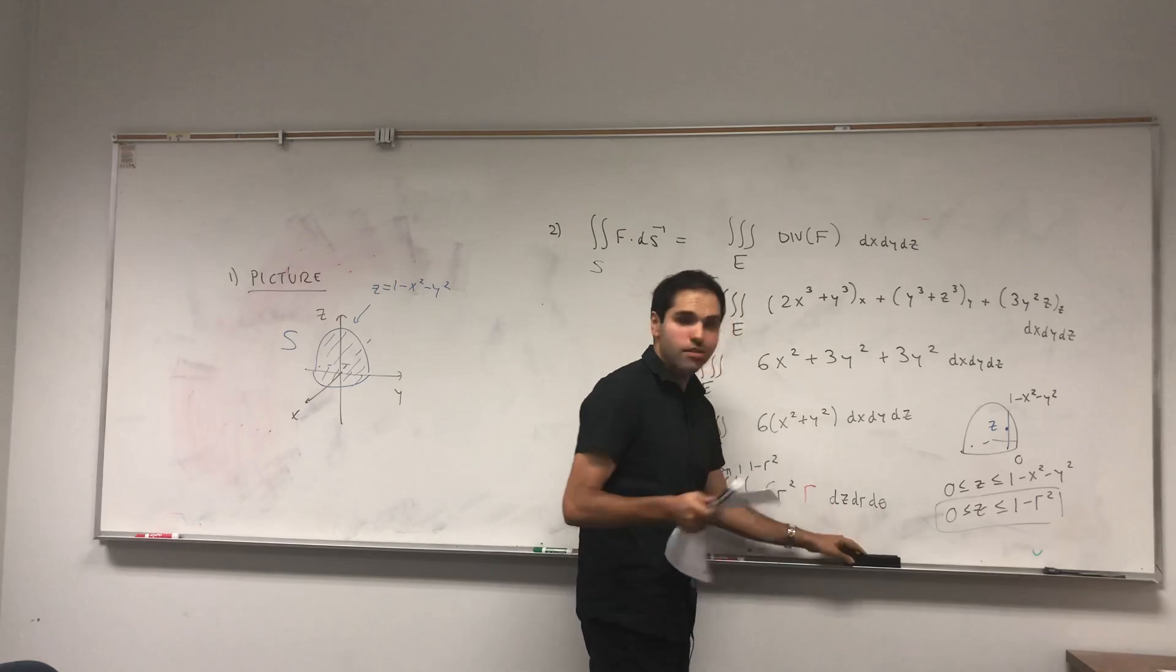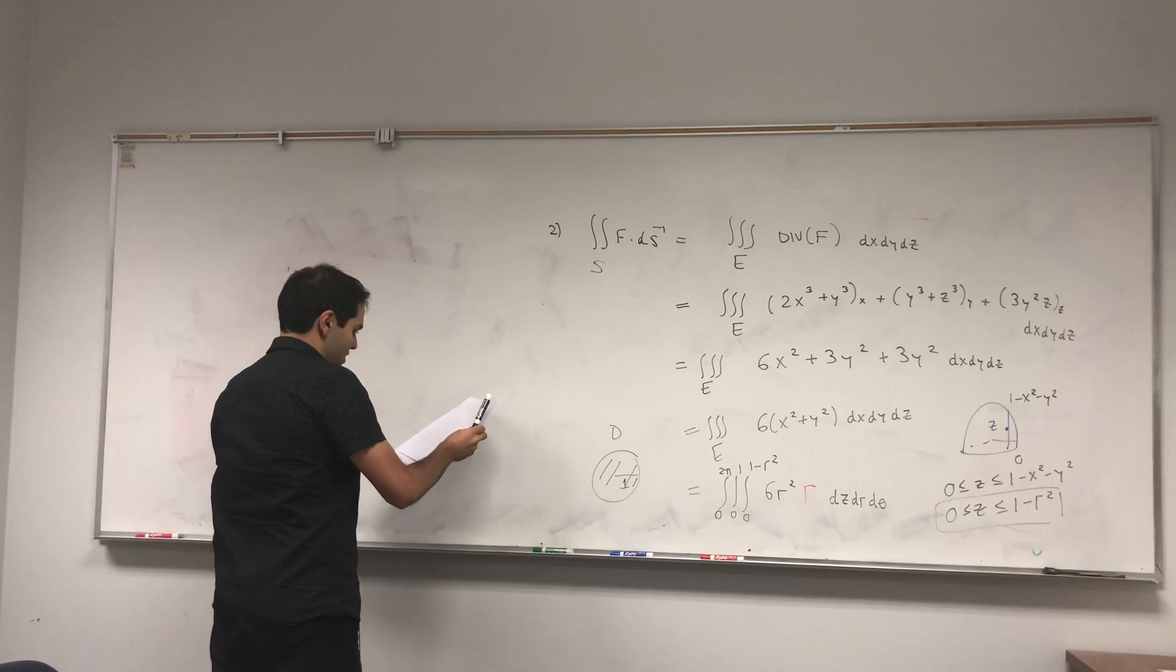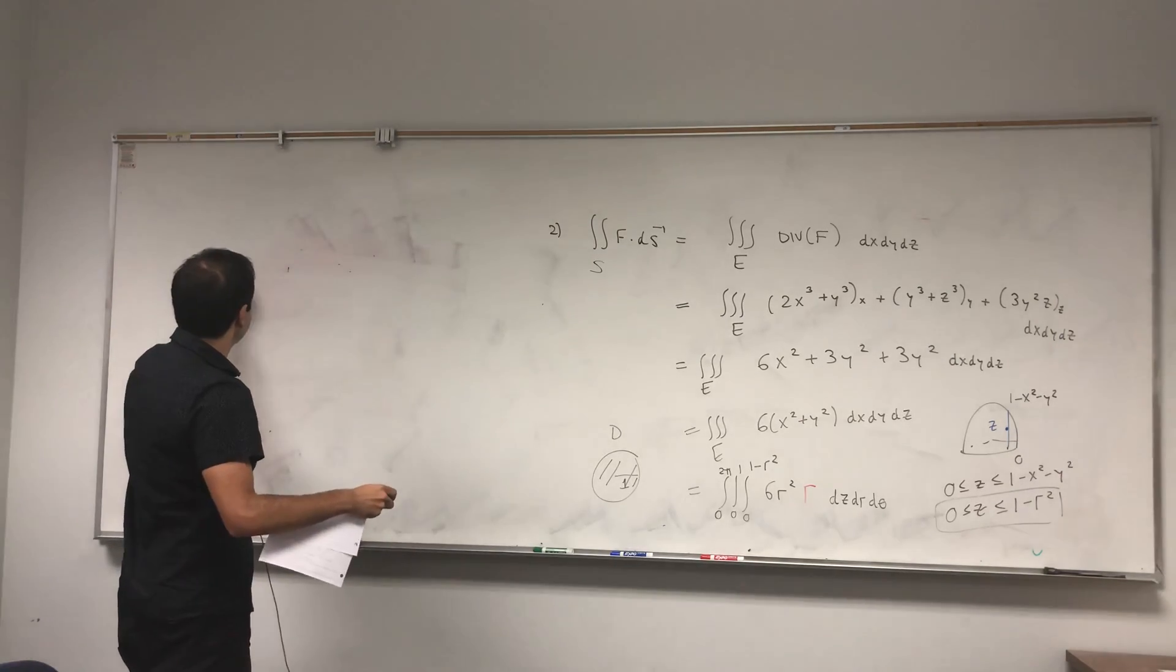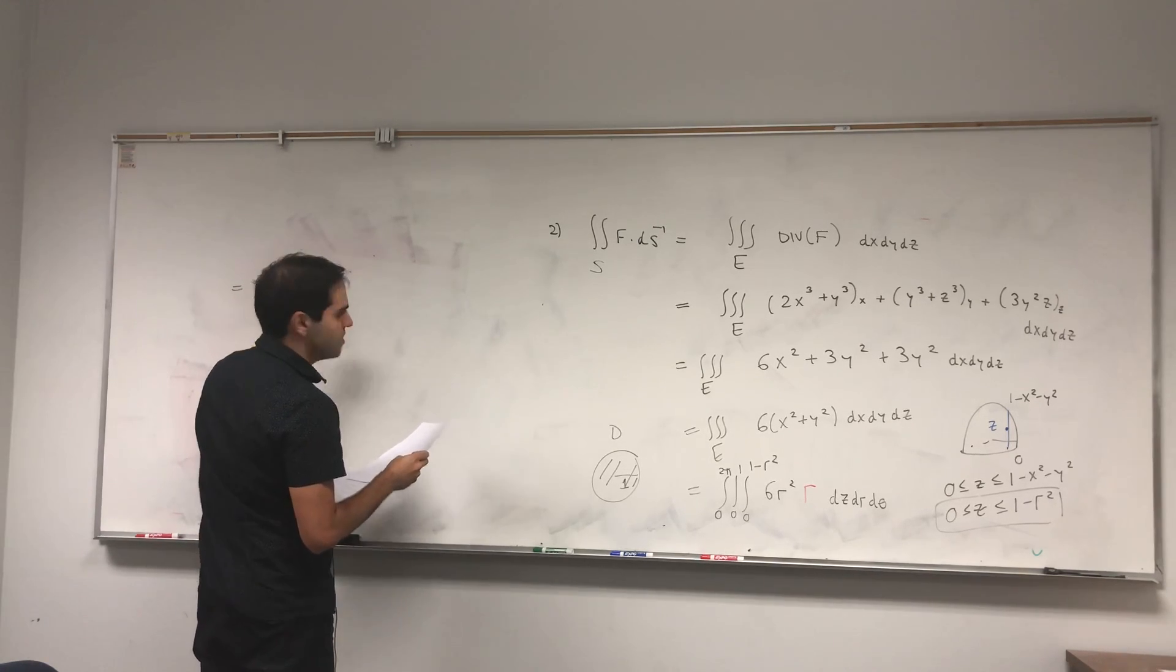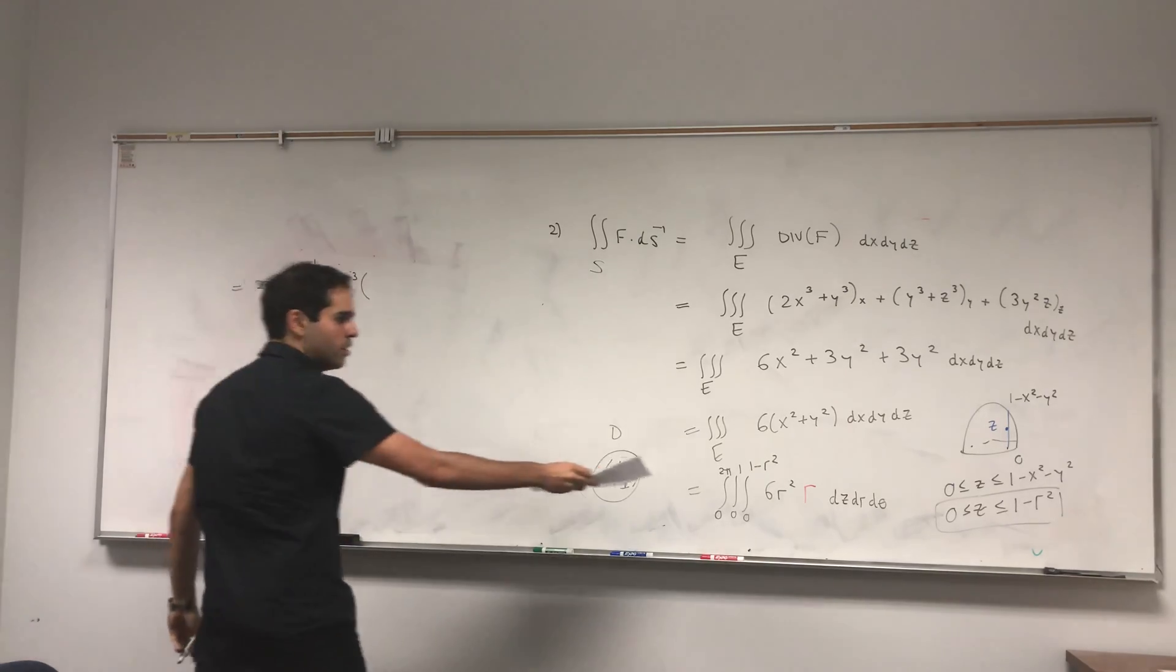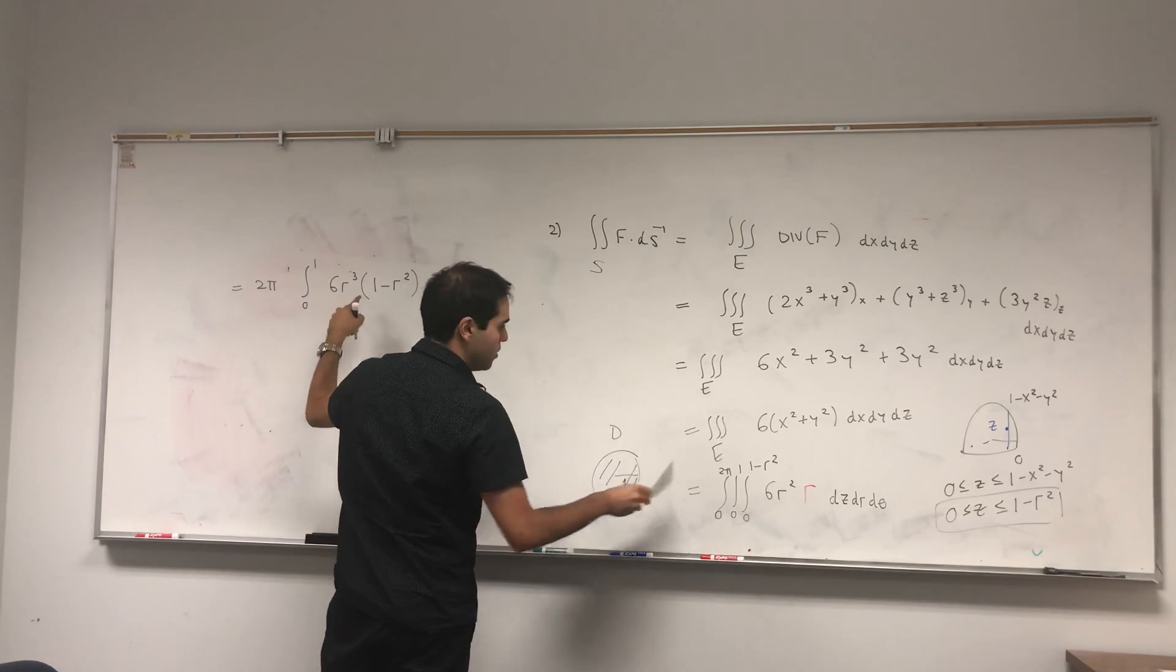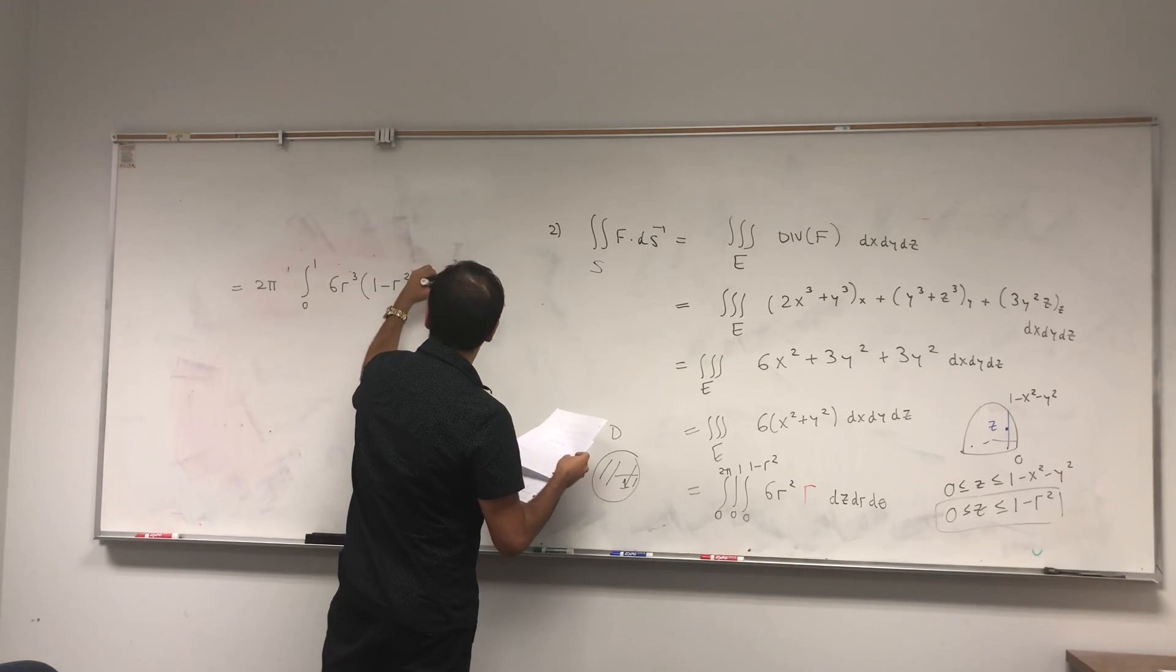It looks scary but it simplifies quite nicely. First of all, there's no theta involved anywhere, so you just multiply by 2π. 2π times the integral from 0 to 1 of 6r³. This just becomes a constant with respect to z, so you write it as 6r³ times (1 - r²), then dr.